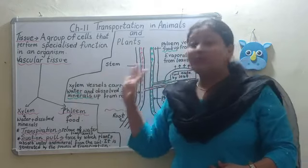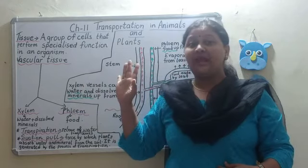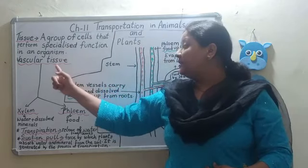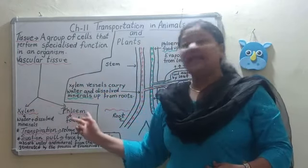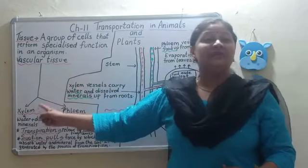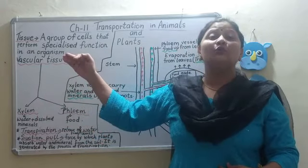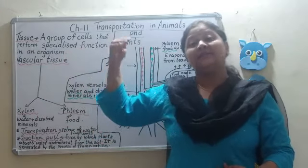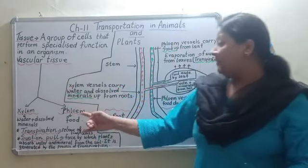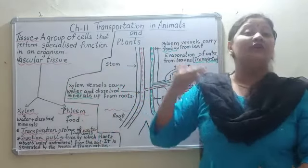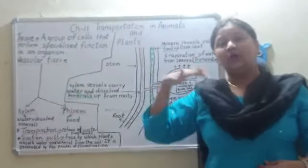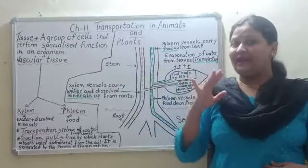So this was all about transportation in plants. It takes place through vascular tissue — xylem and phloem. Xylem helps in the transport of water and dissolved mineral nutrients, and phloem handles the transport of food to all parts of the plant.